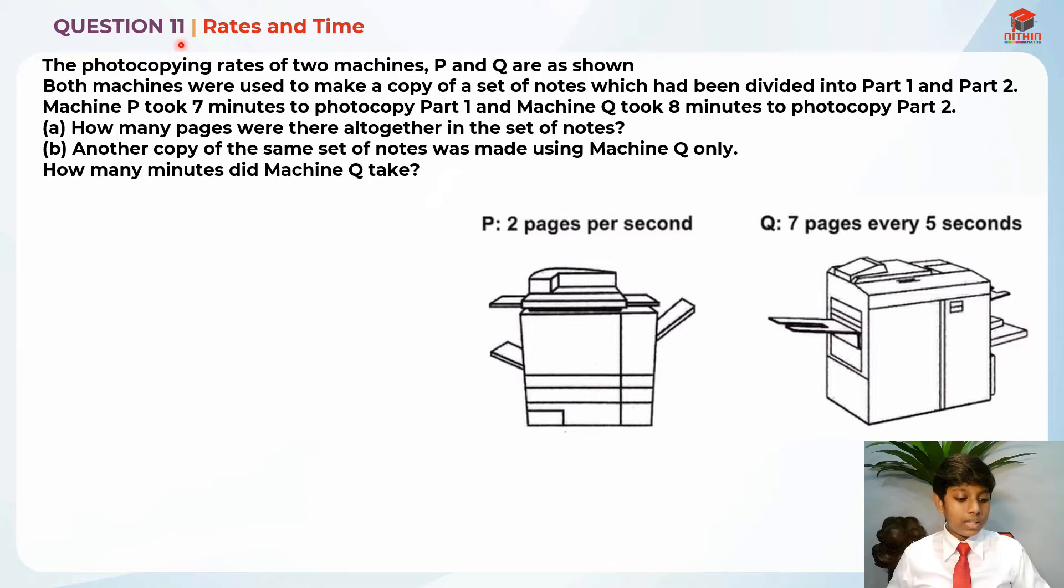This is question 11 and this question is testing us on rates and time. So let's read the question first for part A. The photocopying rates of two machines P and Q are shown. So this is P, 2 pages per second, and this is Q, 7 pages every 5 seconds.